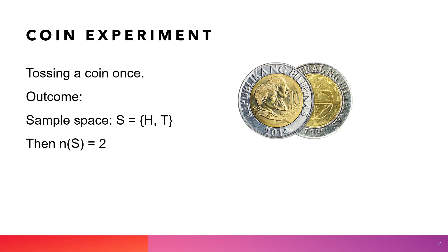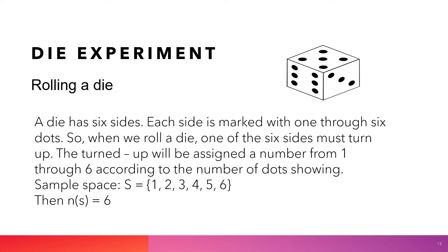In a coin experiment, you have only heads and tails, so the number of outcomes is two because there are only two possible results. In a die experiment, a die has six sides, and each side is marked with one through six dots. When we roll a die, one of the six sides must turn up, assigned as one through six according to the number showing. So in the sample space, there are six events.